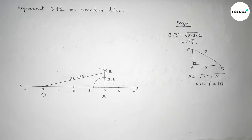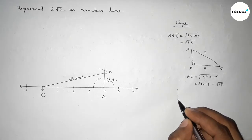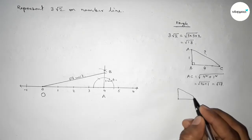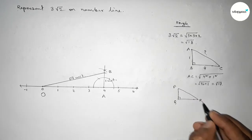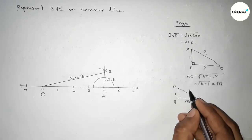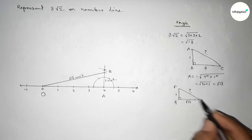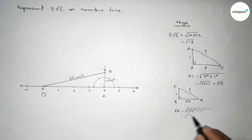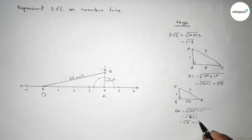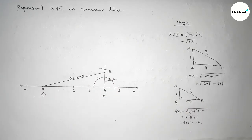Now we have to construct √18. If there is a right angle triangle PQR with base equal to √17 and height equal to 1, then by Pythagoras theorem the hypotenuse equals √(√17² + 1²) = √18 units. So applying this concept here.